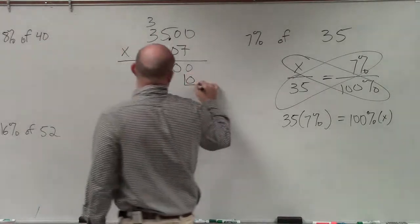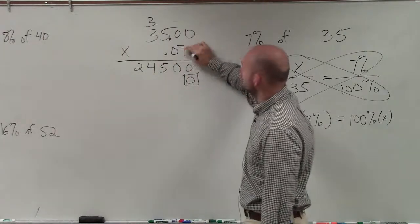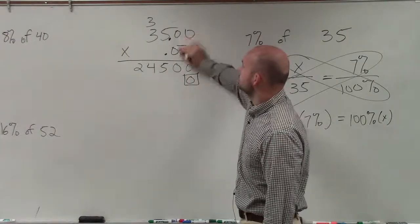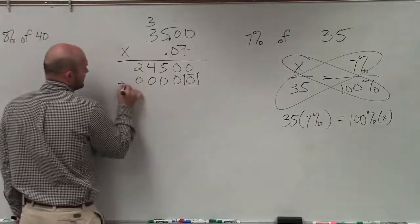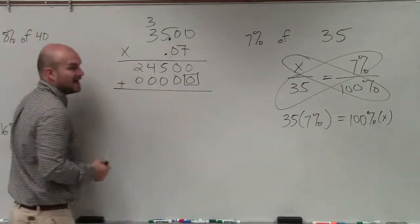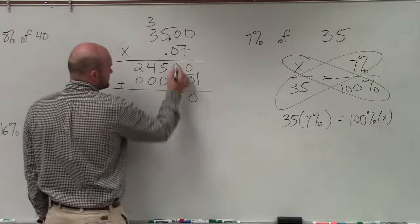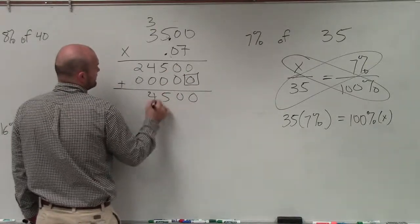Then I have my place value, and I do 0, 0, 1, 1, 2, 3, 4. So there's four zeros. Then I add those rows. So I add straight down 0, 0, 5, 4, 2.